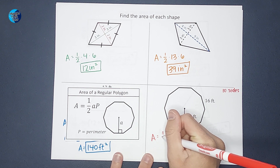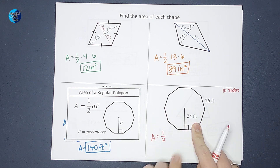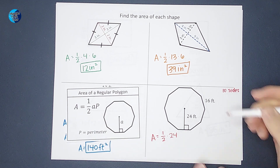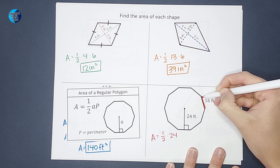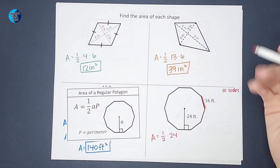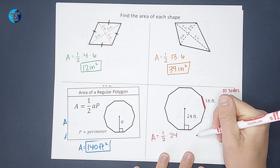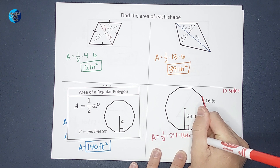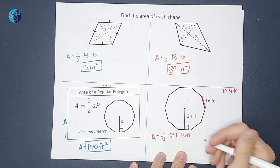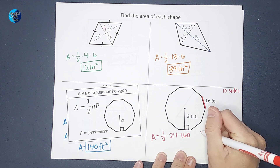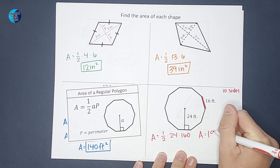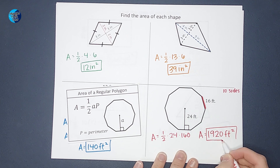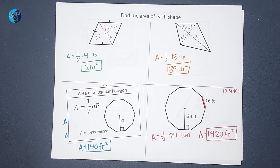The area is one-half times the apothem, which is 24, times the perimeter. To find the perimeter: each side is 16 feet and there are 10 of them, so 10 times 16 gives me a perimeter of 160 feet. When I multiply everything together, the area equals 1,920 feet squared.